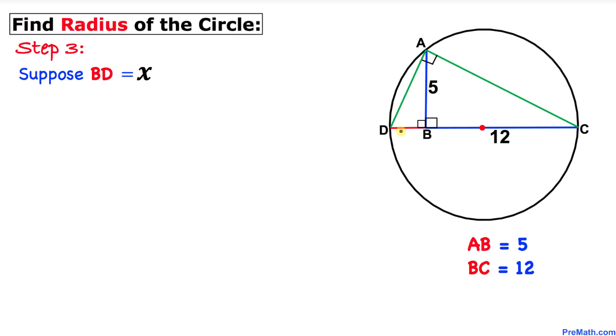Here's our next step: let's suppose that this line segment BD is X units. Now let's focus on these three triangles: triangle DAC, triangle ABD, and triangle ABC. Let me call this angle alpha and this angle beta.